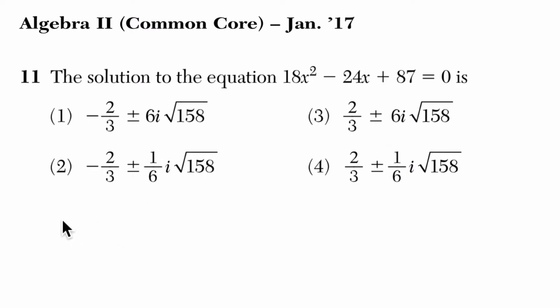So that starts off, of course, where x equals the opposite of b, so b is already negative 24 and the opposite of that is positive 24, plus or minus the square root of negative 24 squared minus 4 times a, 18,